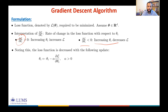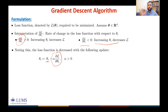This update is achieved by setting θᵢ_new = θᵢ − α · (∂L/∂θᵢ). By subtracting α times the partial derivative of the loss function with respect to θᵢ, we move θᵢ in the direction that decreases the loss function.